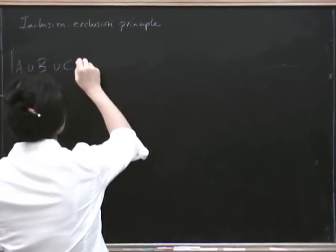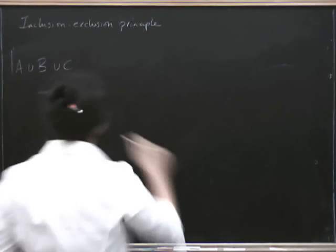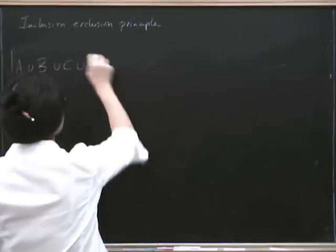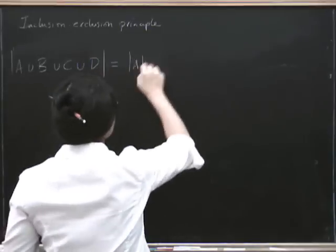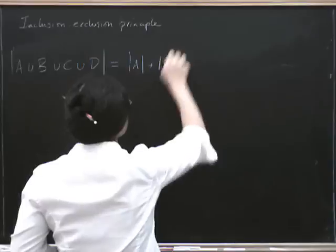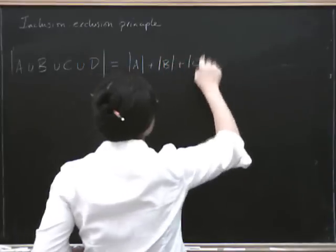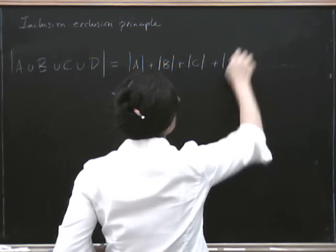So hopefully, we can just sort of guess from the way the pattern was going. So if I put four sets up, what we're going to do is we're going to start by taking the elements in A, the number of elements in B, plus the number of elements in C, plus the number of elements in D, right?